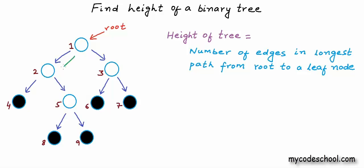Number of edges in longest path from root to a leaf node is 3. For both 8 and 9, number of edges in path from root is 3. So height of the tree is 3.